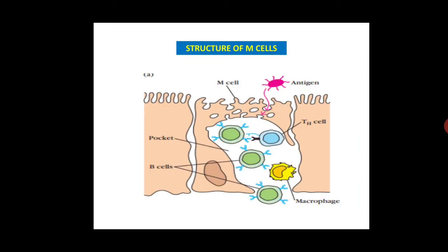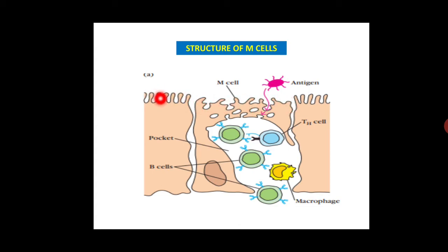This is a diagram of M cells in which the white area is the pocket. The green circles are B cells, the light blue is the helper T cell, and the yellow one represents macrophages. The M cells are devoid of microvilli, which are present in the adjoining cells but absent in M cells.